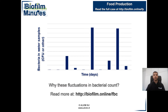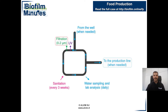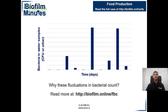Quite puzzling results were observed. While some days the bacterial count in water was very low, some other days high amounts of bacteria were observed instead. The customer thought that the filter was broken and tried to replace it with a new one, but still large fluctuations in bacterial count were observed. Why?